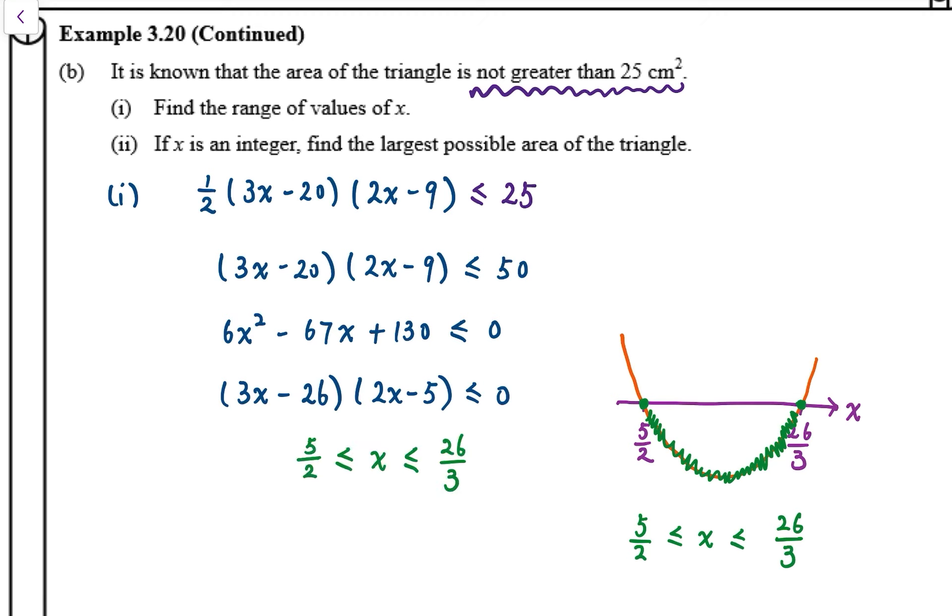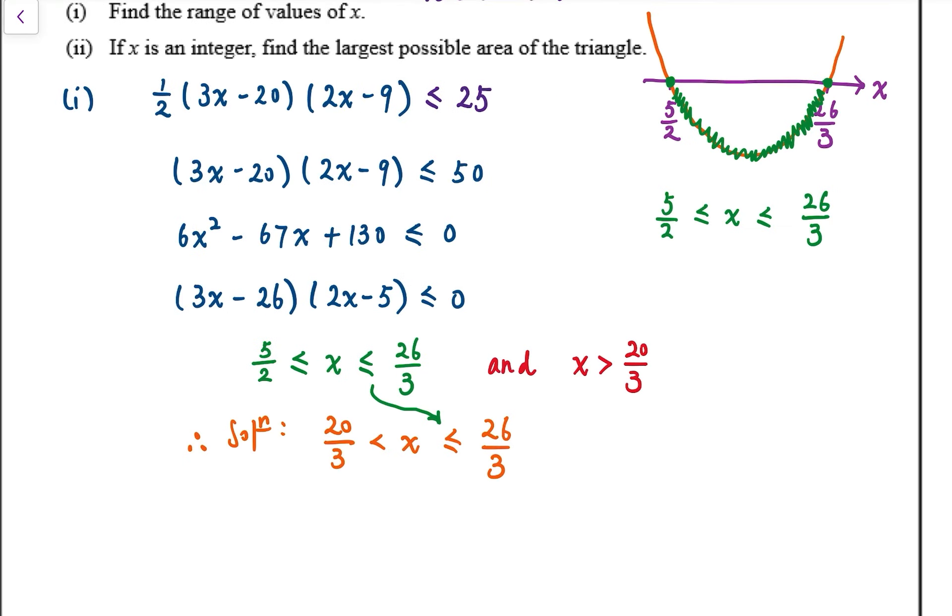Using the range of values of x in B1 together with the range of values of x in part A, so combining these two inequalities, the range of values of x is 20 over 3 less than x less than or equal to 26 over 3.